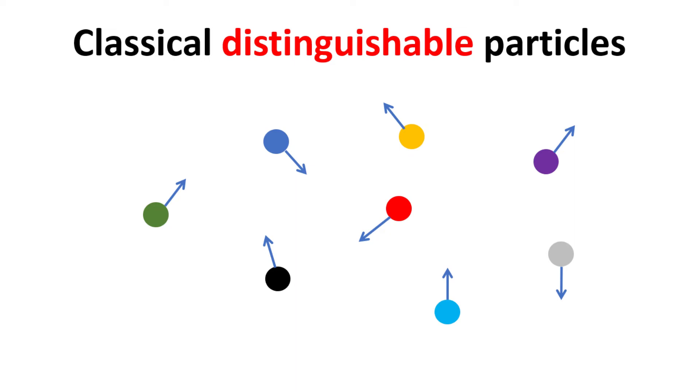Here, particles, although physically identical, are treated as distinguishable because their position and velocity are assumed to be traceable.